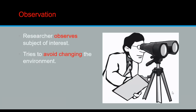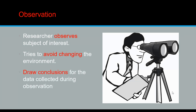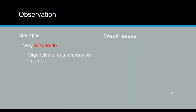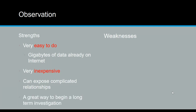First, with observation — like you can see with the word 'observe' — it means that the researcher is literally watching the subject of interest in different ways, trying not to have any effect on the environment. Based on those observations, the researcher will then draw conclusions. As we look at the strengths: it is definitely easy to do and does not require much money, and it can also expose complicated relationships, leading into further investigations.